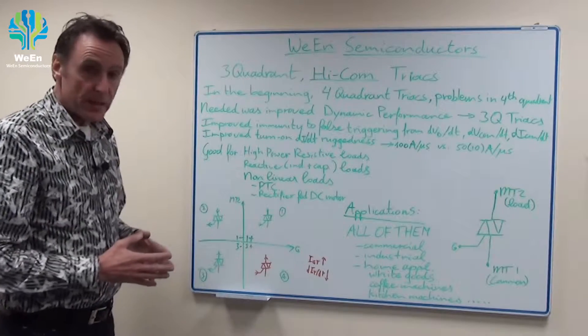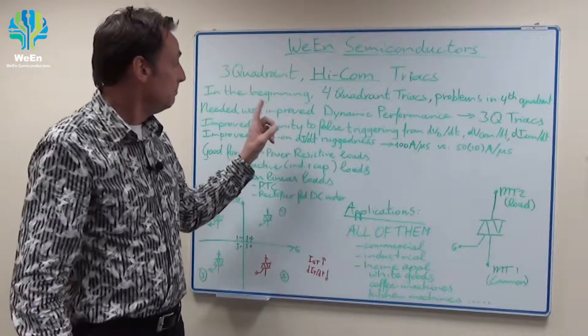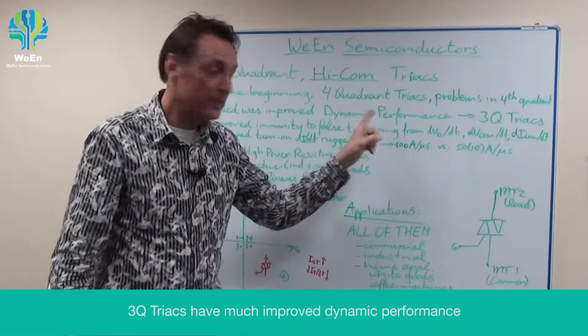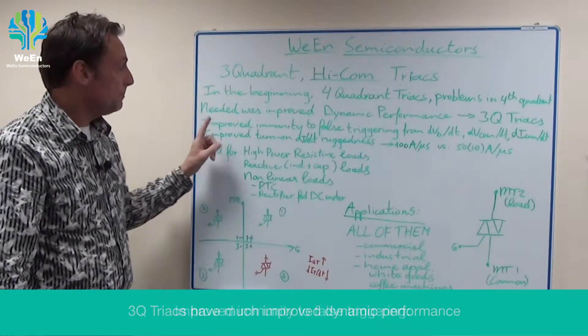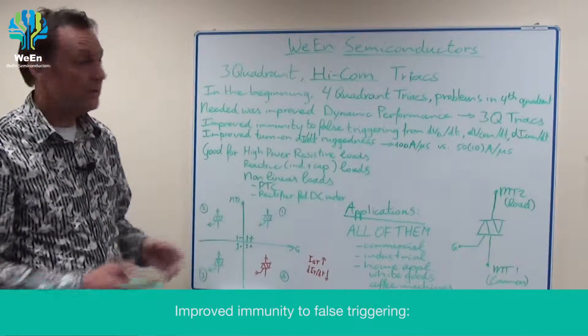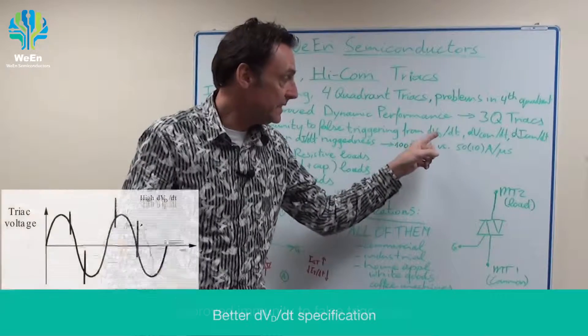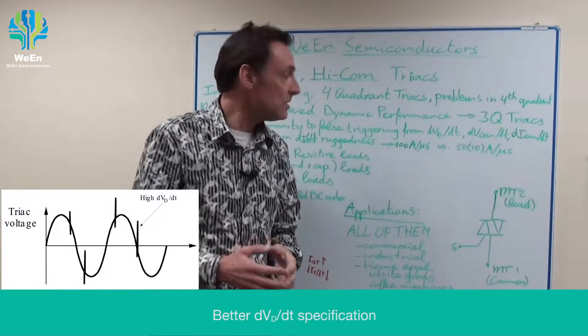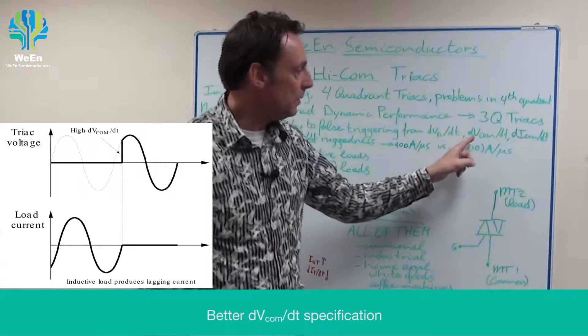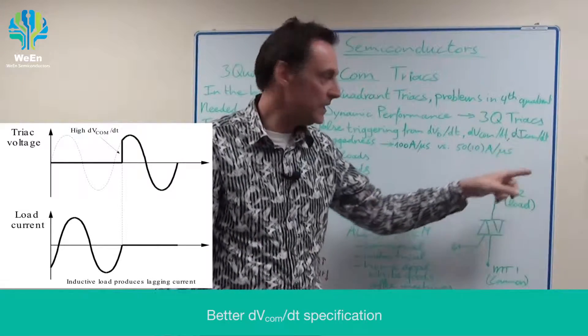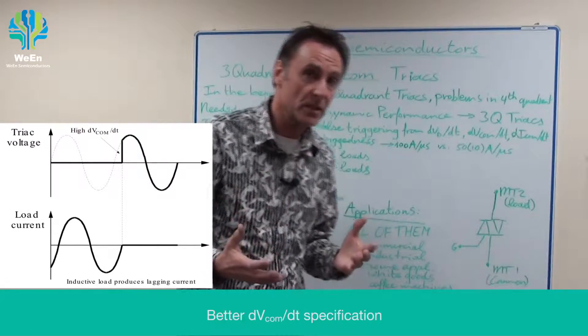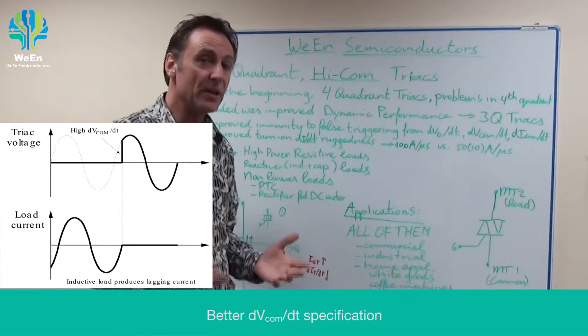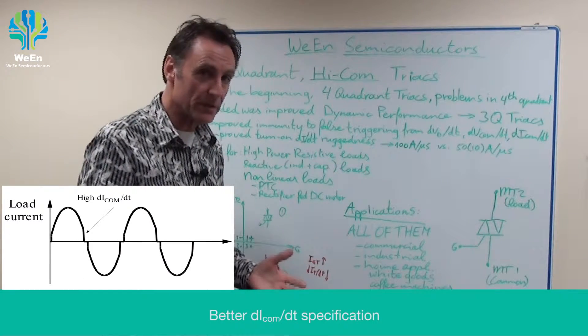A three quadrant triac has a much improved dynamic performance. It has improved immunity to false triggering from DV/DT, for instance transients, and DV_COM/DT and DI_COM/DT. COM stands for commutation. Commutation is the switching off of the triac when the load current falls to zero.